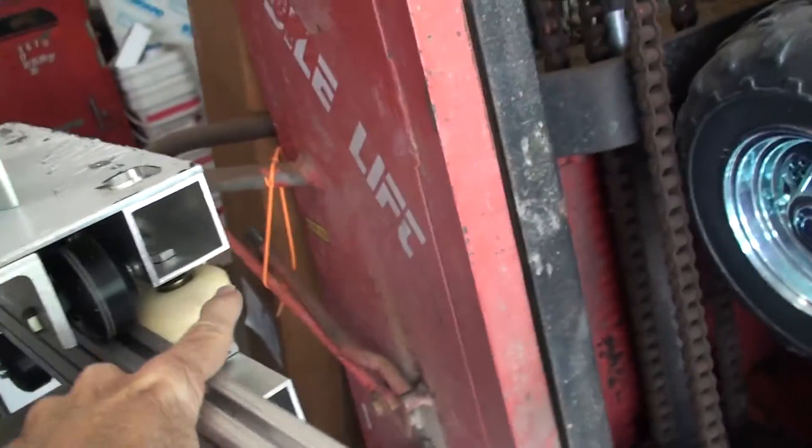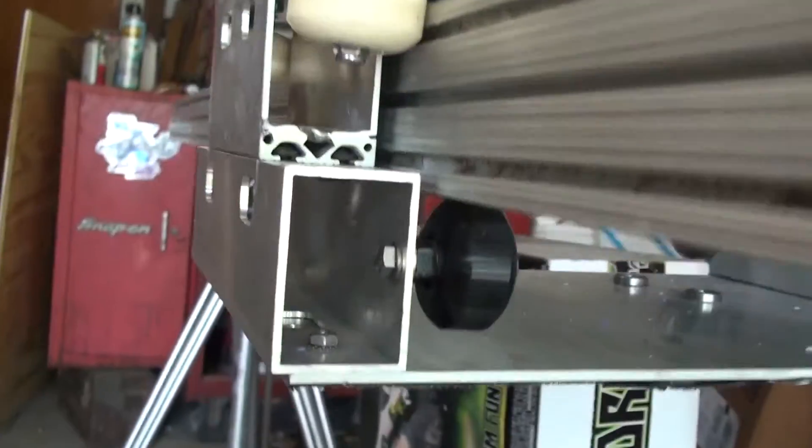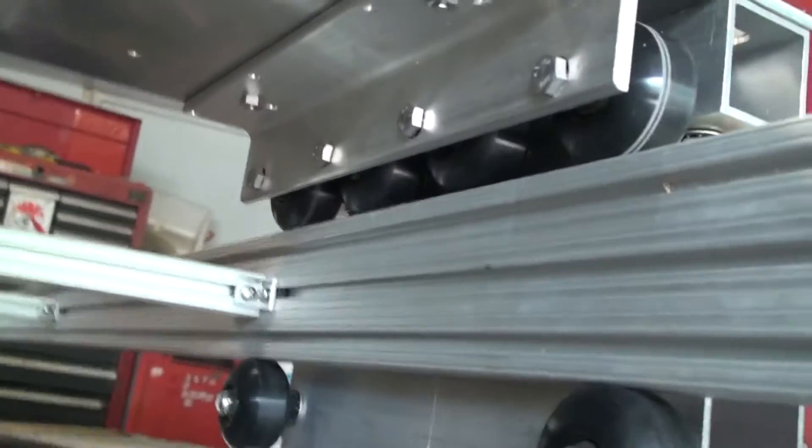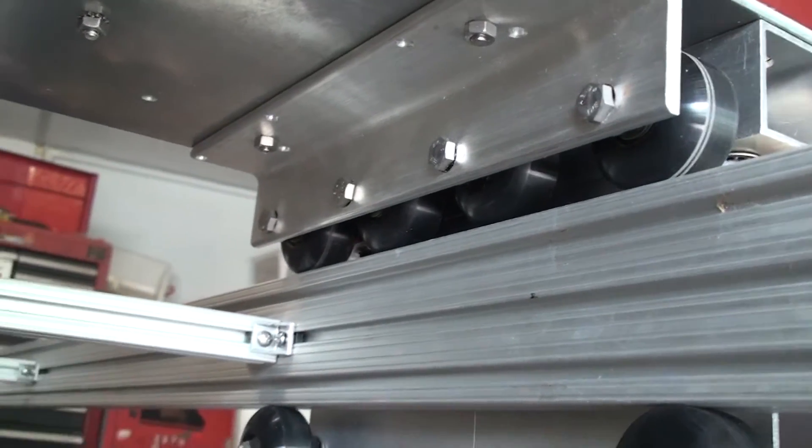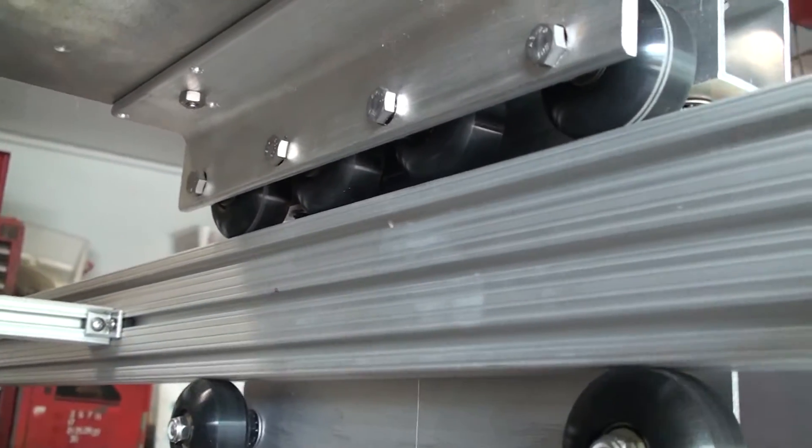I've got four below the track, four on the sides of the track, and eight wheels running on top of the track. This can support a lot of weight and move very freely.